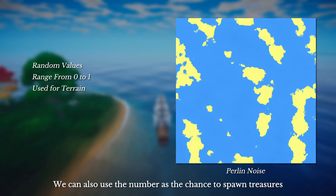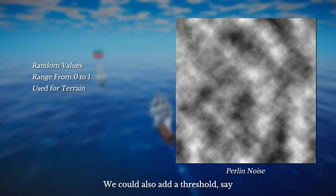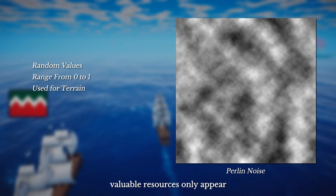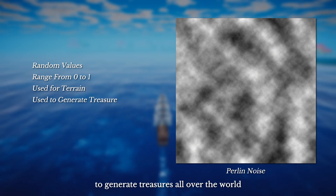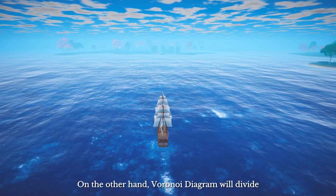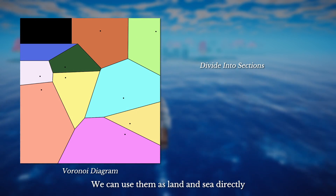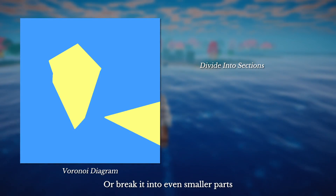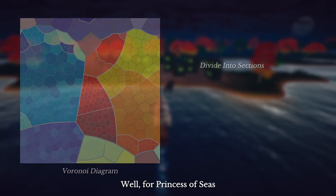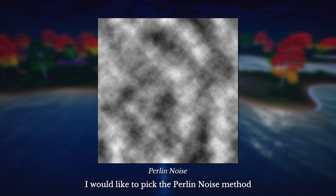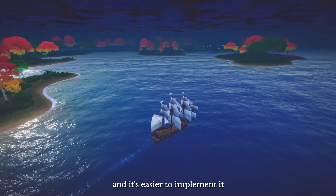We can also use the number as the chance to spawn treasures — a cell with a higher value can spawn more precious items. We could also add a threshold: valuable resources only appear with a value greater than 0.99. That could be a good solution to generate treasures all over the world. On the other hand, Voronoi Diagram will divide the whole area into several small sections. We can use them as the land and sea directly, or break them into smaller parts and assign some details. For Princess of Seas, I would like to pick the Perlin noise method because it is easier to create a smoother coastline, and it is easier to implement.